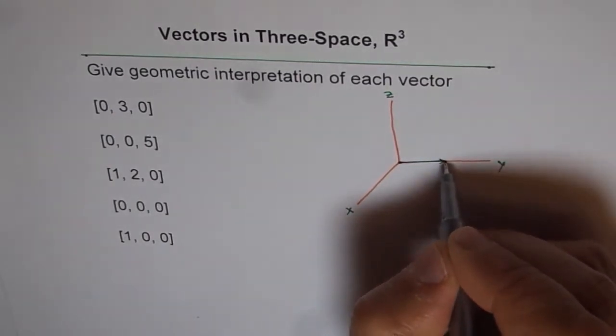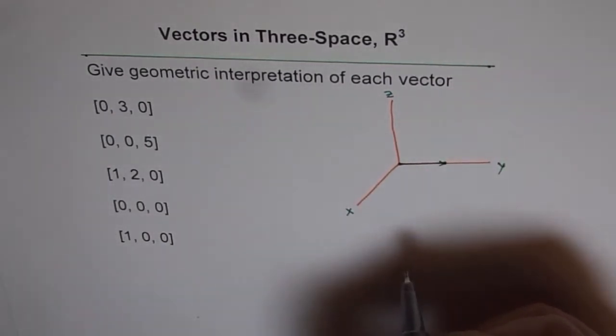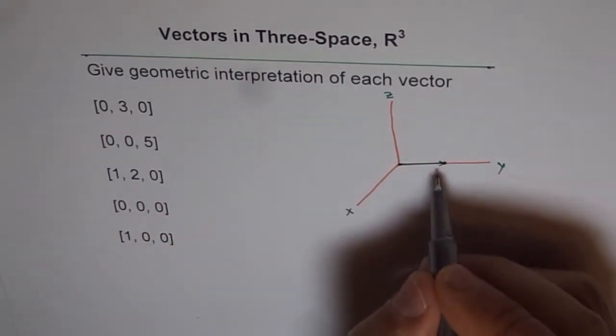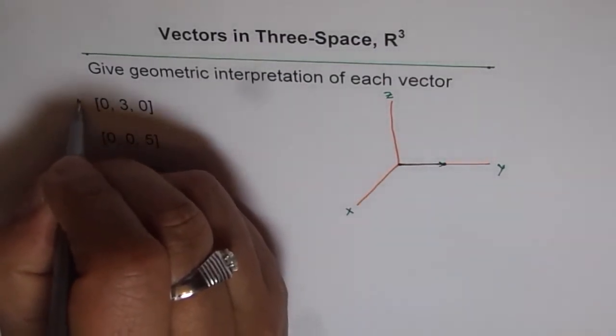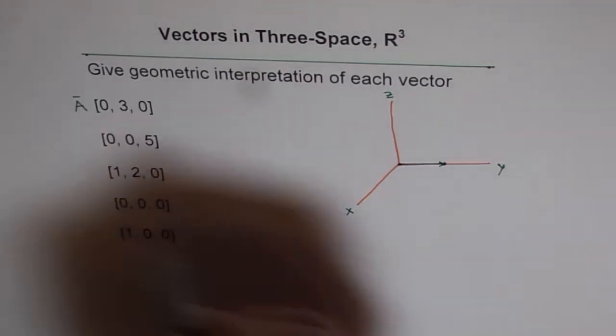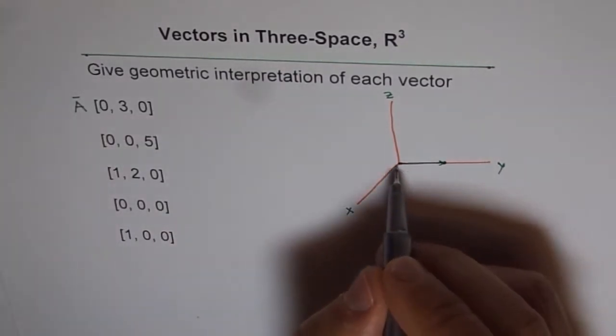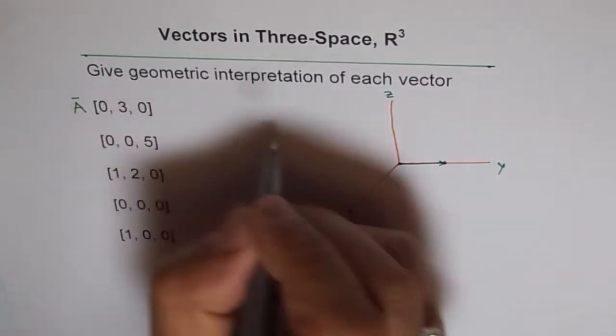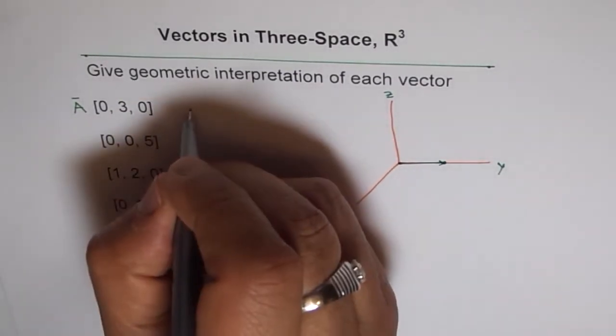Then zero units along z, so basically you're stationed here. So the vector (0, 3, 0) is a vector along the y-axis. Let me call this vector A. So vector A for us is a vector along the y-axis of three units.